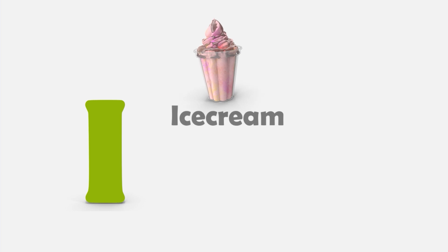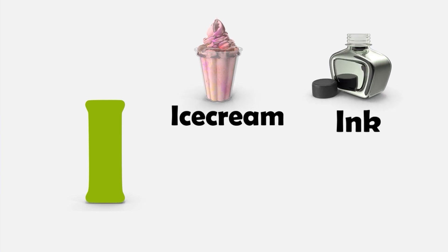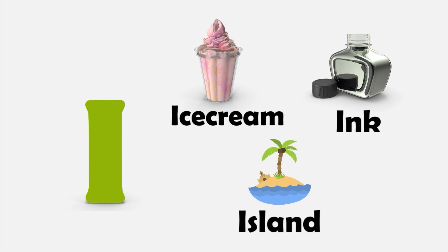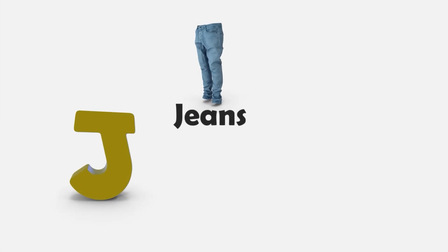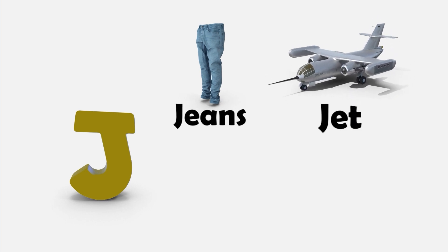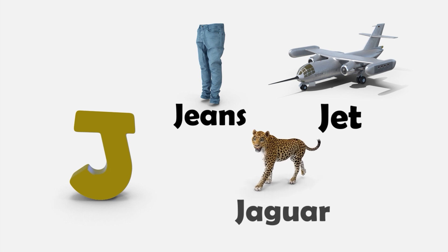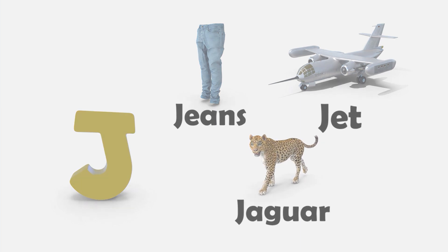I — I is for Ice Cream. I is for Ink. And I is for Island. J — J is for Jeans. J is for Jet. J is for Jaguar.